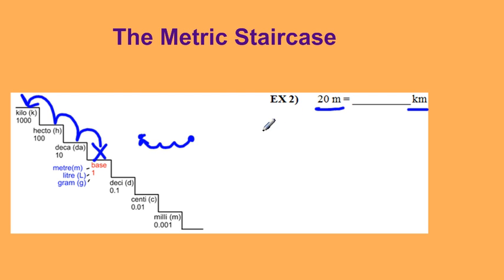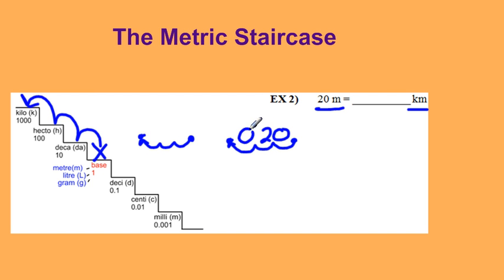So if I'm starting with twenty, I can assume my decimal place is on the end and I'm moving it to the left three times. That last one I'm going to have to fill in a zero. So twenty meters is actually zero point zero two zero kilometers.